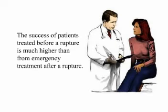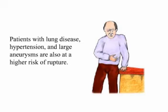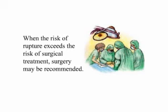The success of patients treated before a rupture is much higher than from emergency treatment after a rupture. The larger the aneurysm, the higher the risk that it will rupture. Patients with lung disease, hypertension, and large aneurysms are also at a higher risk of rupture. If the aneurysm is small, surgical treatment may not be recommended — a follow-up exam in 6 to 12 months is necessary to see if the aneurysm is growing. When the risk of rupture exceeds the risk of surgical treatment, surgery may be recommended.